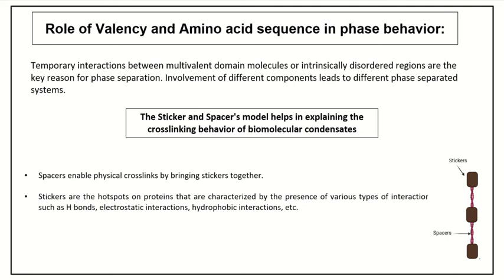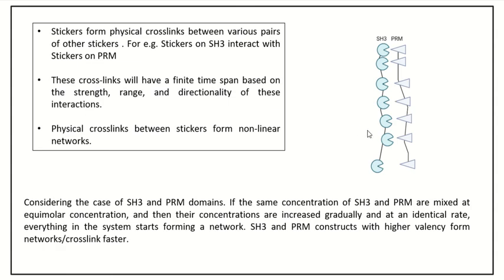A detailed illustration is provided in the coming slide. This illustration describes how two proteins named SH3 and PRM interact with each other. Their interaction cross-links will have a finite time span, based on the strength, range, and directionality of the interaction between these two proteins. It has been observed that if the same concentration of SH3 and PRM are mixed at equimolar levels and their concentrations are gradually increased at an identical rate, everything in the system starts forming a network. Moreover, if we increase the valency of SH3 and PRM, the cross-linking behavior also increases — that is, the time of formation of these networks starts decreasing.